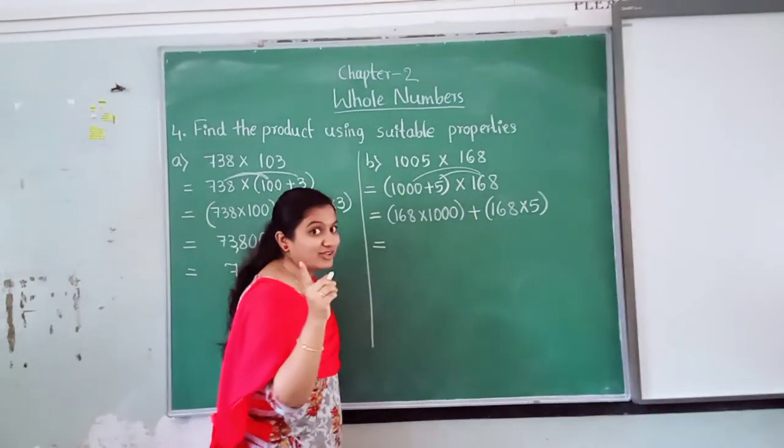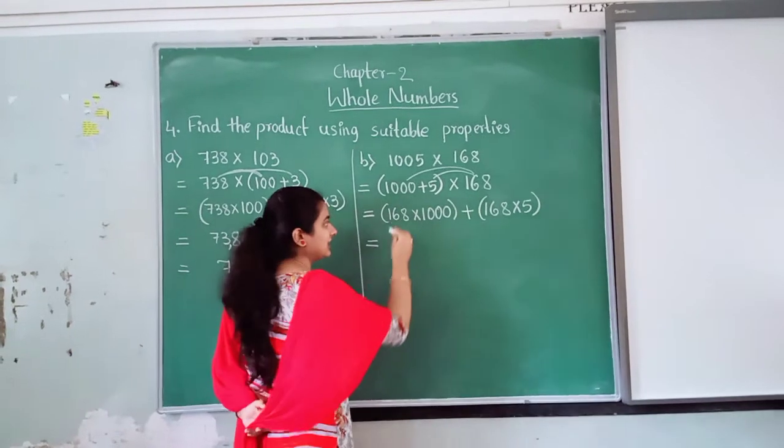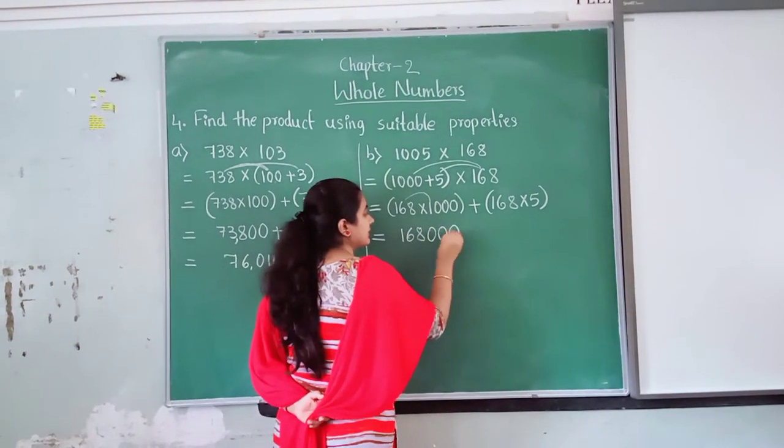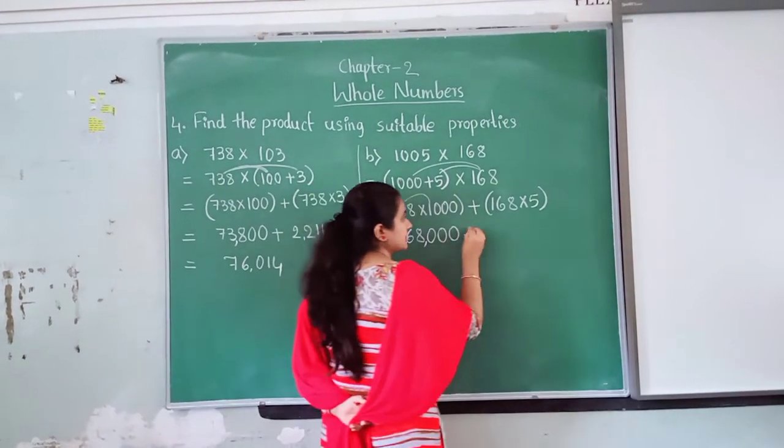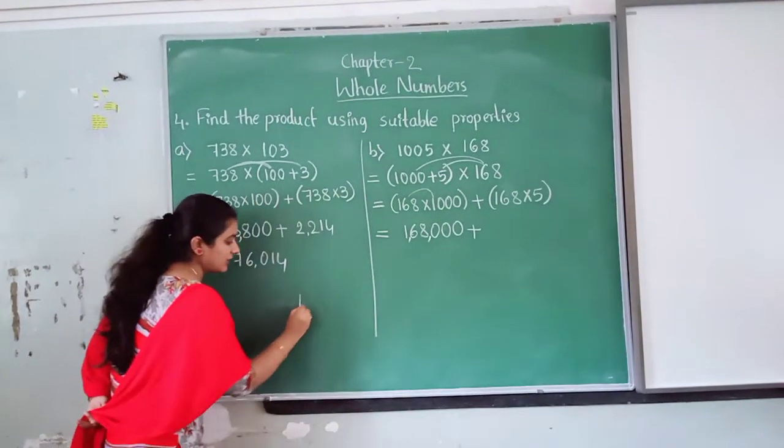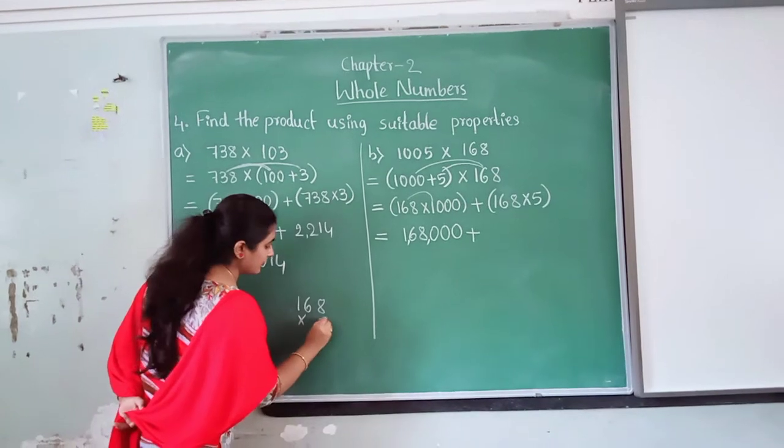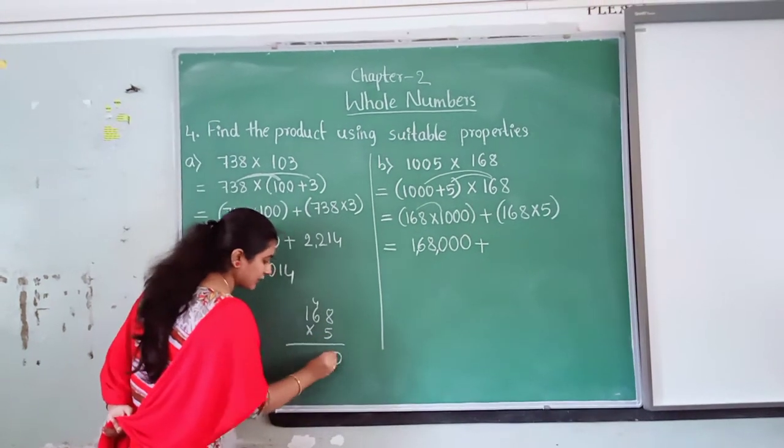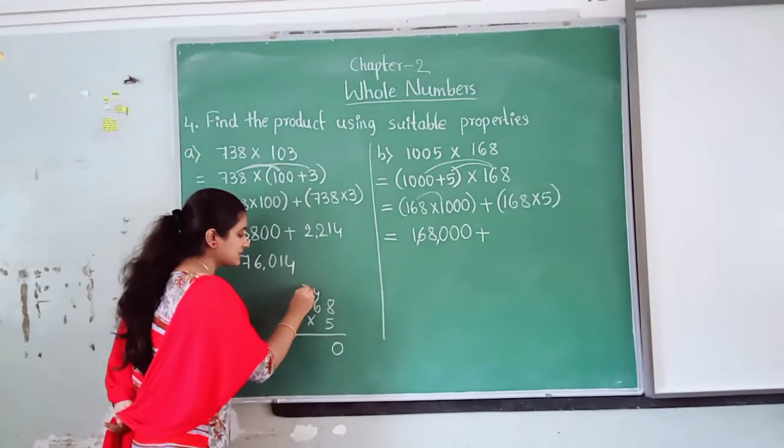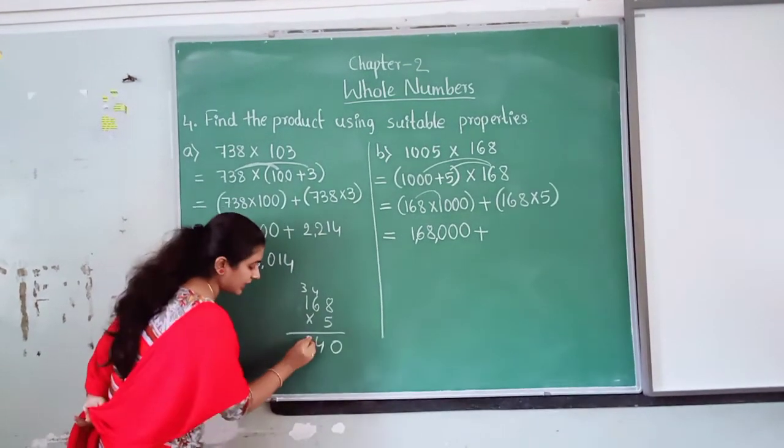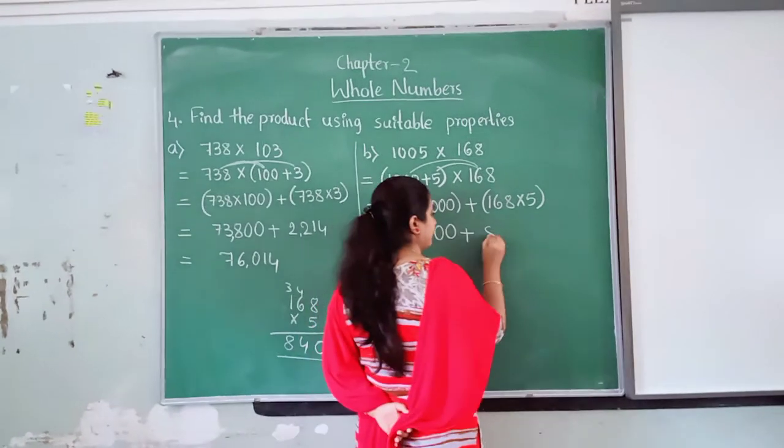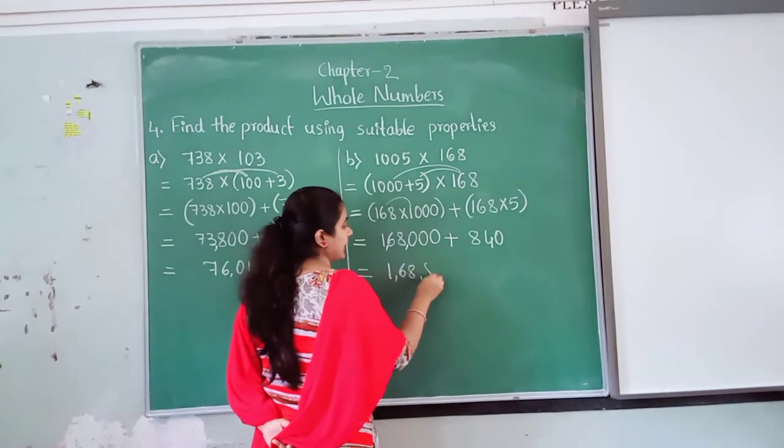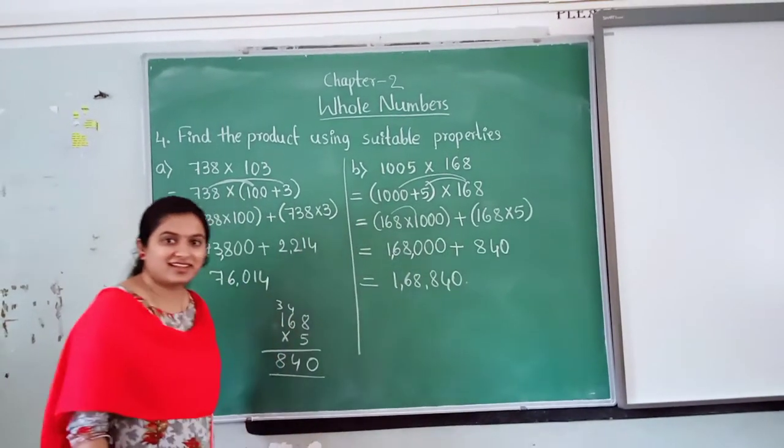Now, I will write in line. I have told you children, no need of this rough work. Directly write 168 times. 168. How many zeros? 3 zeros. After 3 digit, I mean 2 digit. Here, you need to do rough work. 168 into 5. 5 eights are 40. 5 sixes are 30 plus 4, 34. 5 ones are 5 plus 3, 8. 840. Again, add these two and write 168,840. Understood, children?